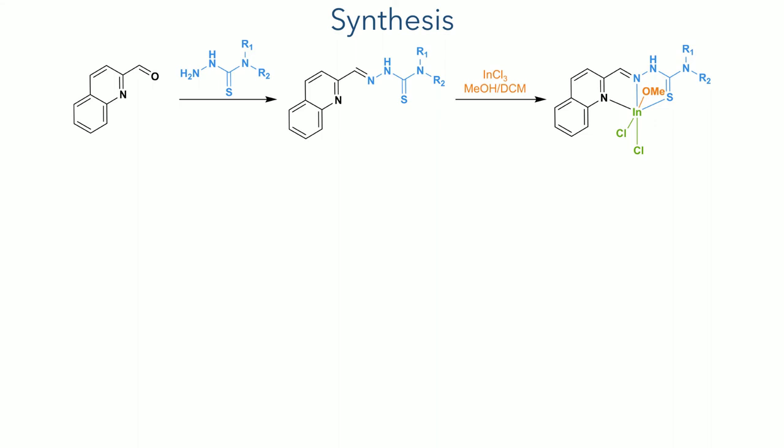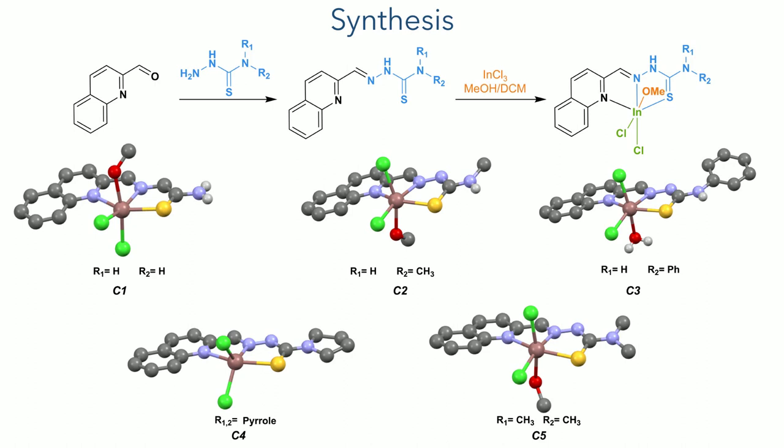In total, the researchers synthesized five different compounds for screening, which varied the functionality at the terminal nitrogen atom. All of the compounds were mononuclear, with one indium atom coordinated to one molecule of the ligand. Four of these compounds showed a six-coordinate distorted octahedral geometry with one molecule of solvent coordinated to the central indium atom. The compound bearing the pyrrole functional group was five-coordinate and lacked the solvent coordination, showing a distorted trigonal bipyramidal geometry.